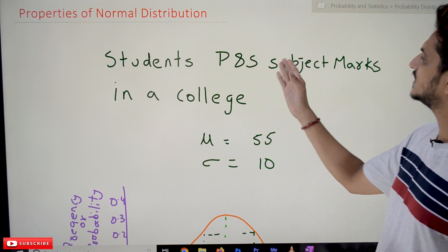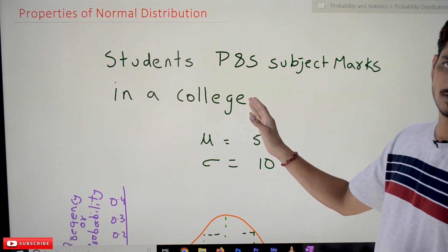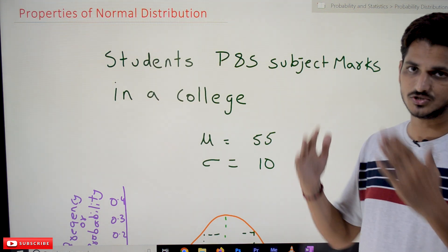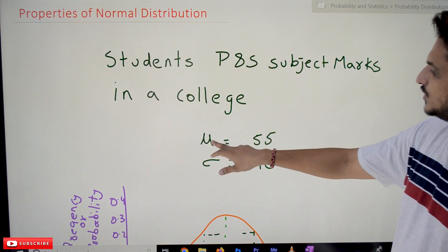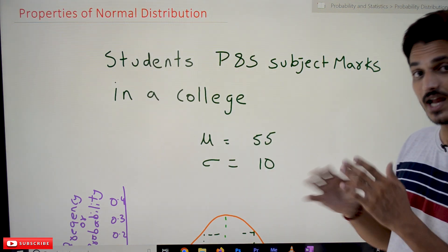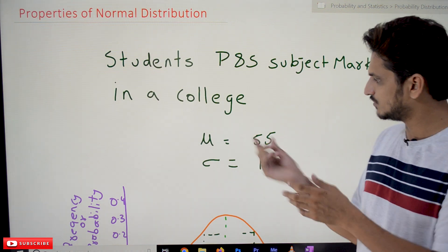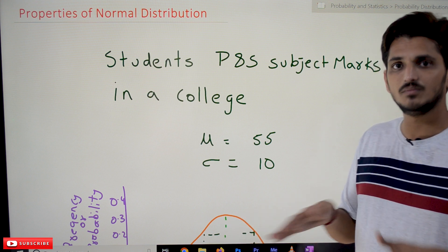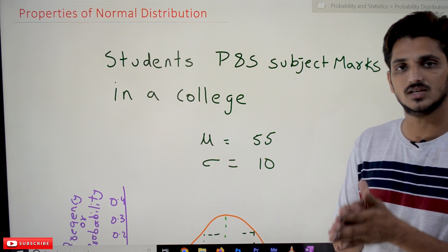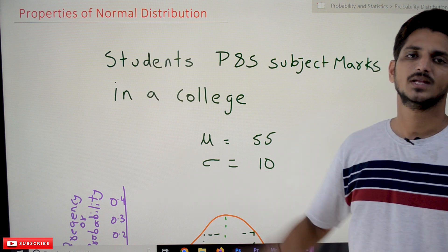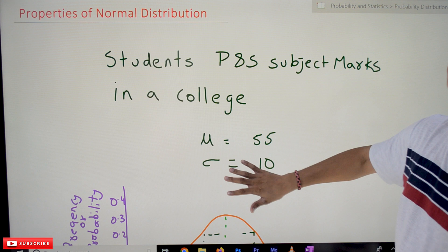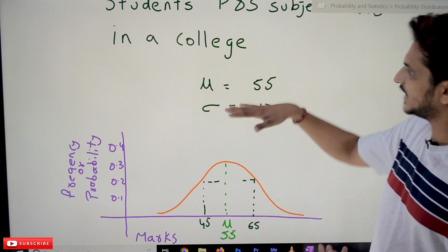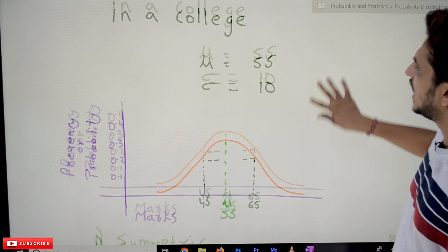Coming to today's class, we are going with an example: students' probability and statistics subject marks in a college. If you plot this data and it follows a normal distribution, the mean value is 55 — on average students got 55 marks — and standard deviation is 10, meaning there is a deviation of 10 marks between students. So for this data, we will explore how to plot the normal distribution and what its properties are.